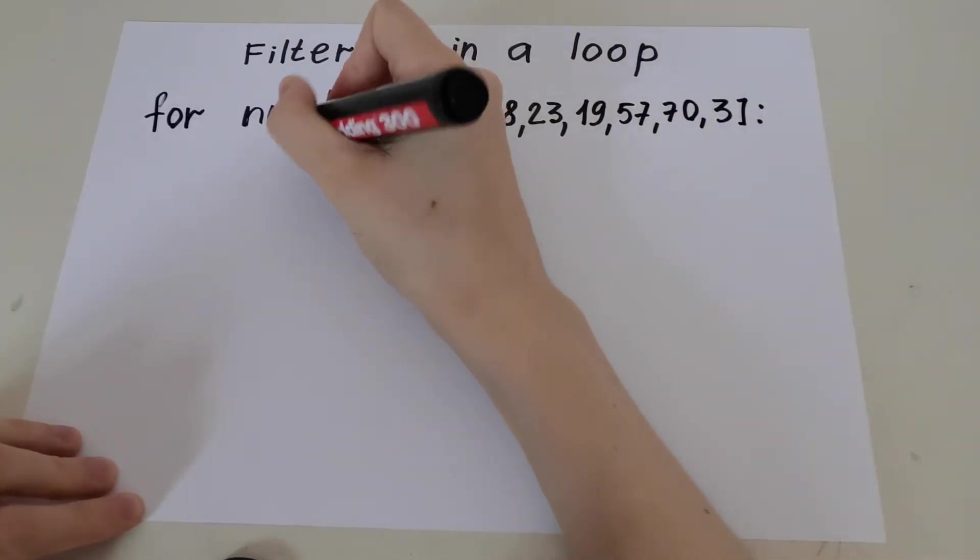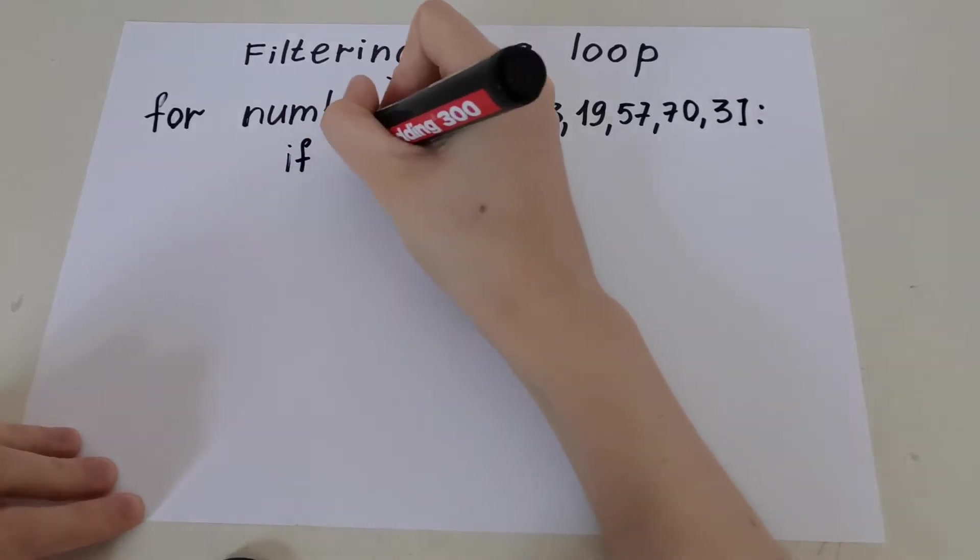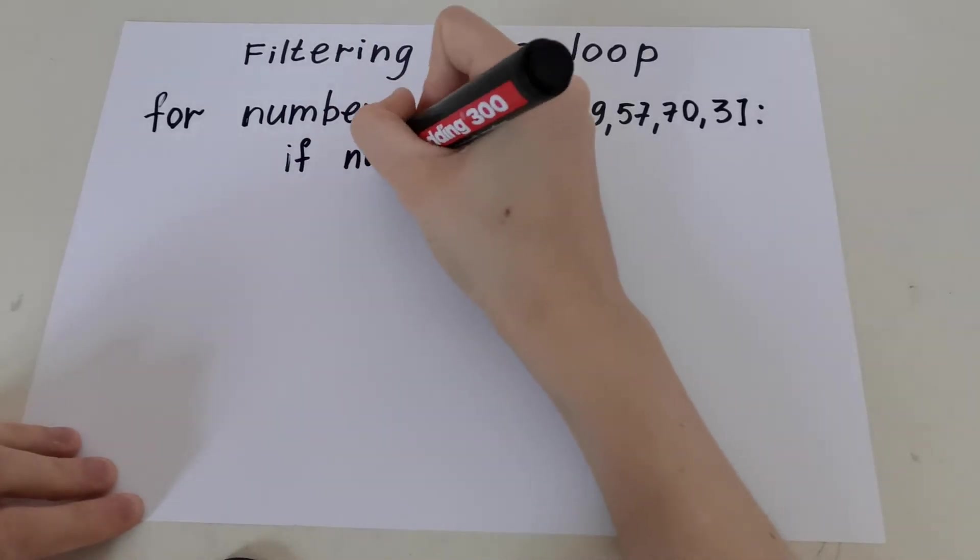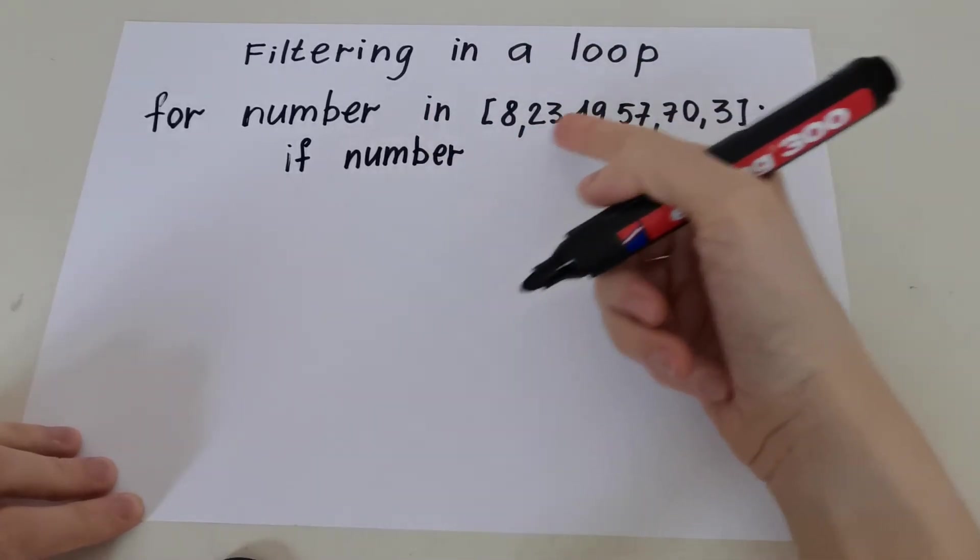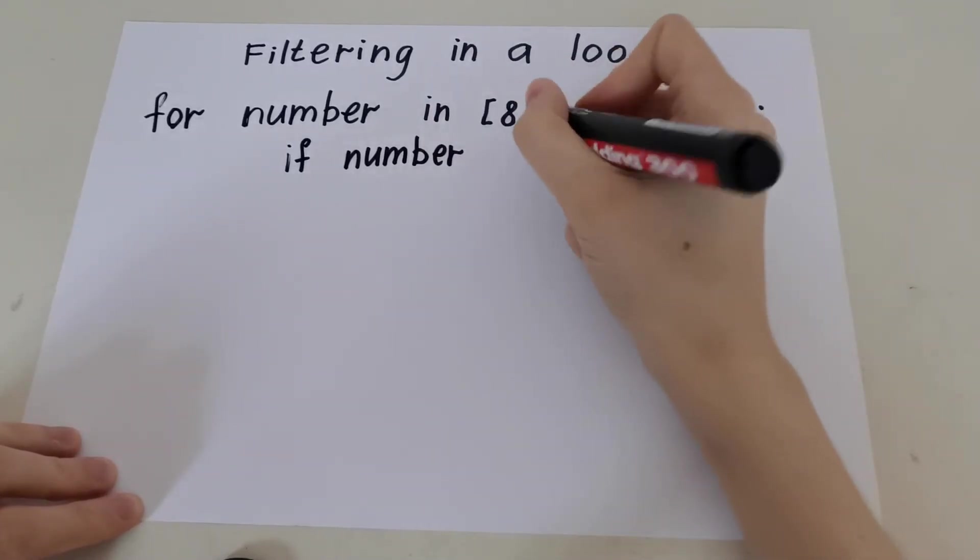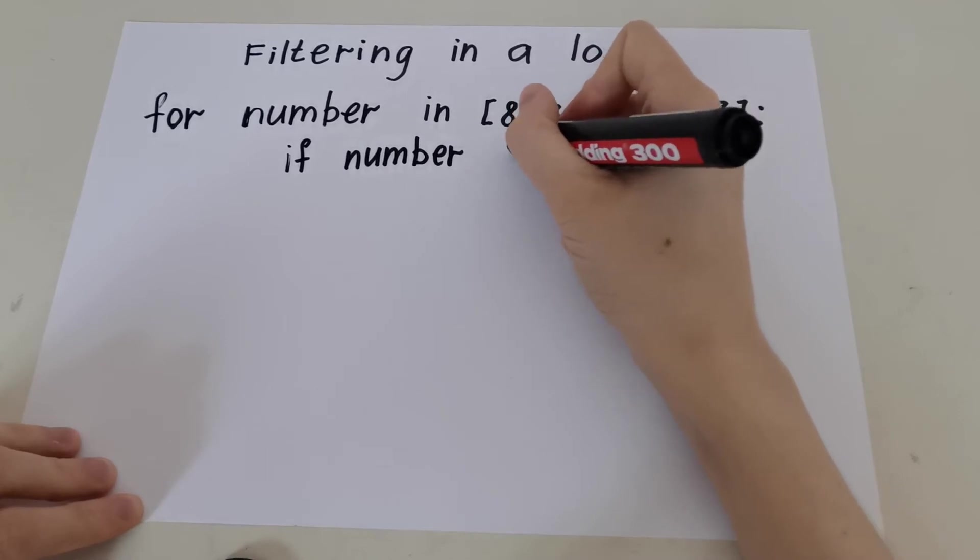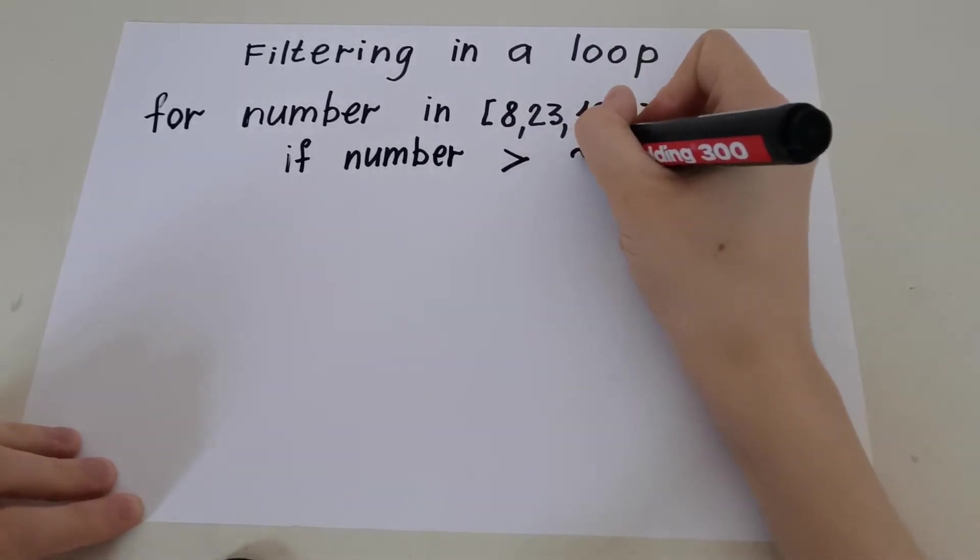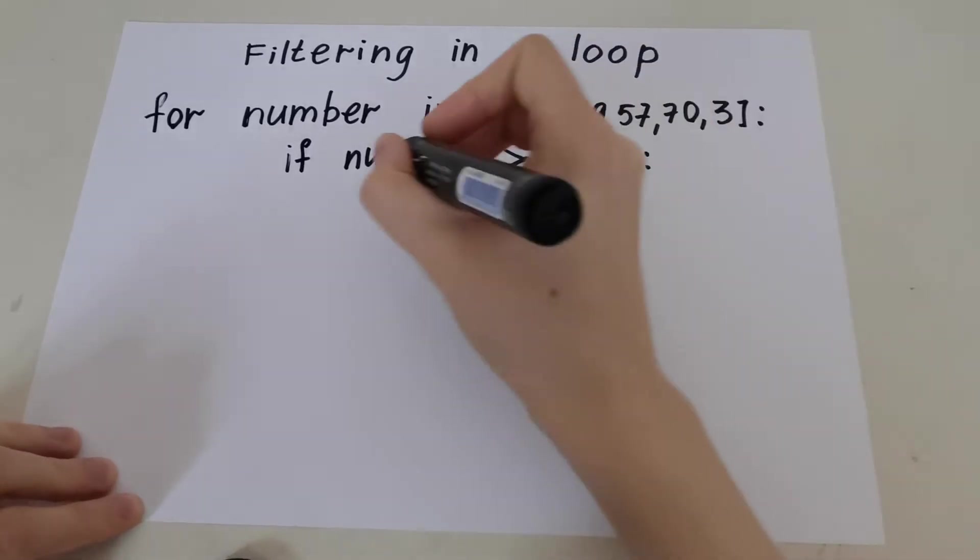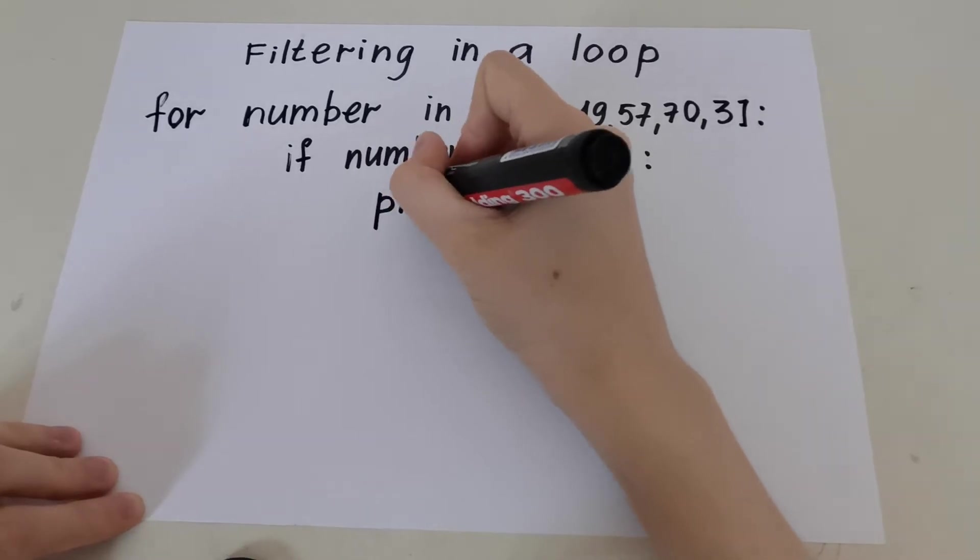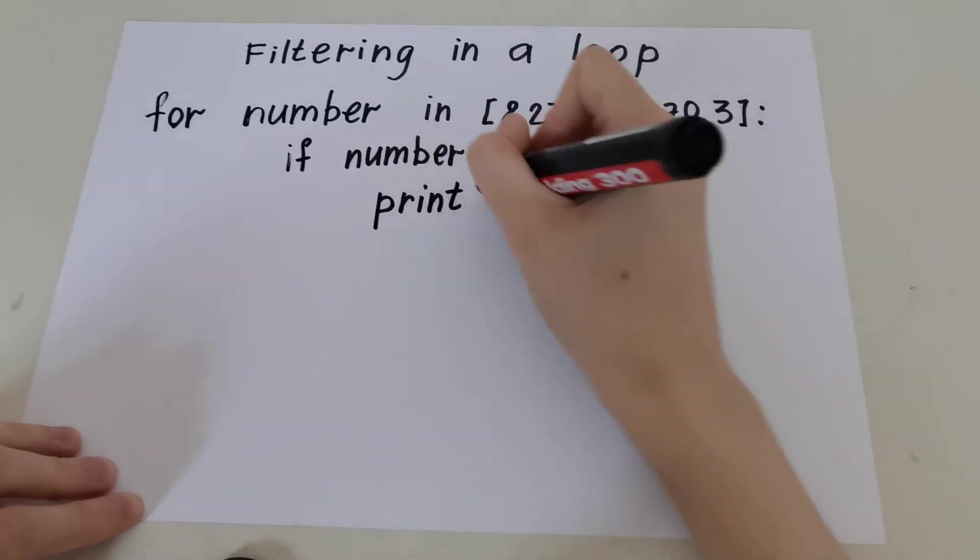Then let's write a condition line. If number - it's our iteration variable in this list - if number greater than 20, then print number.